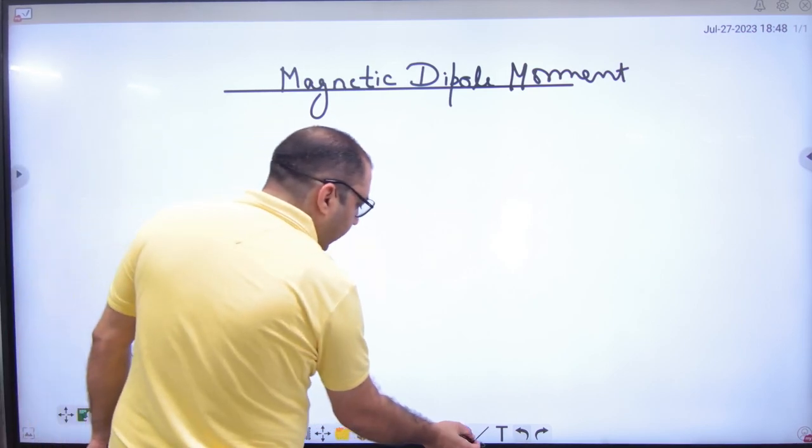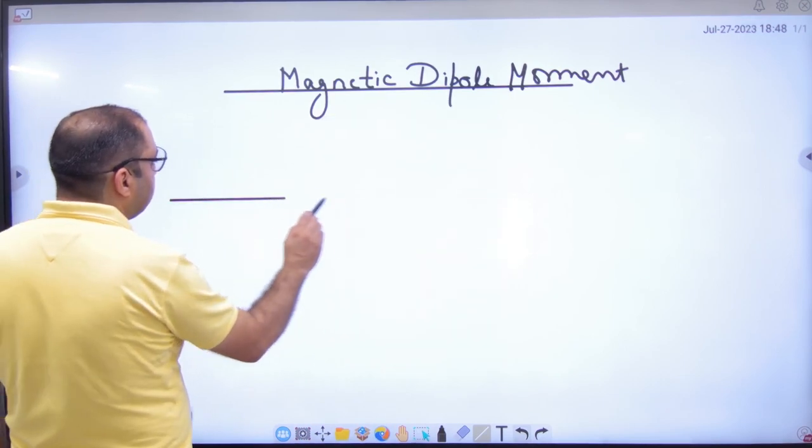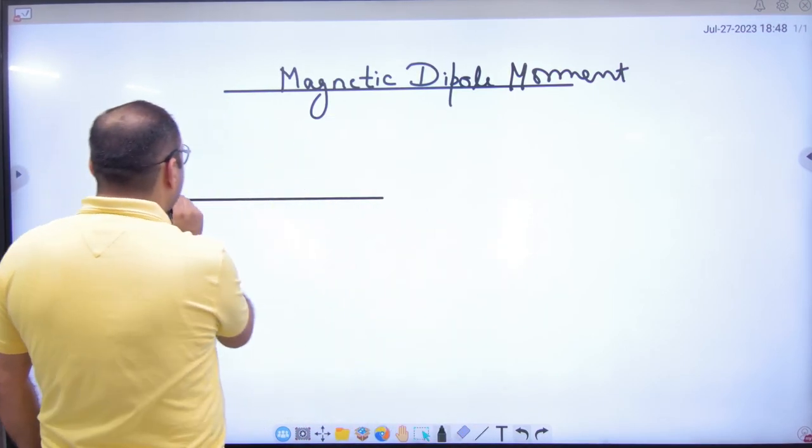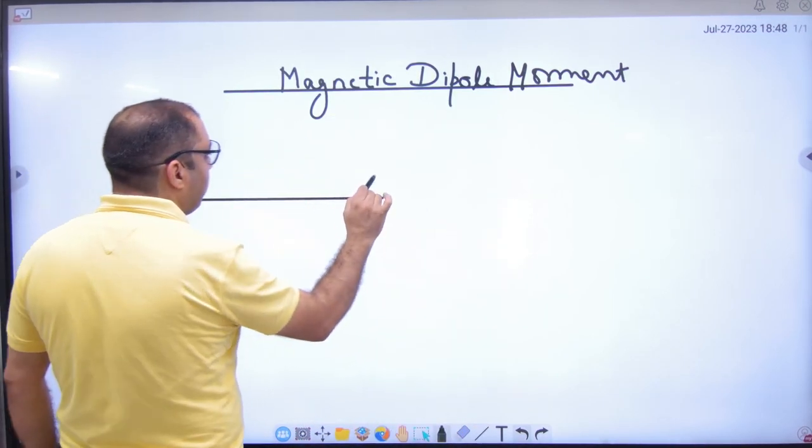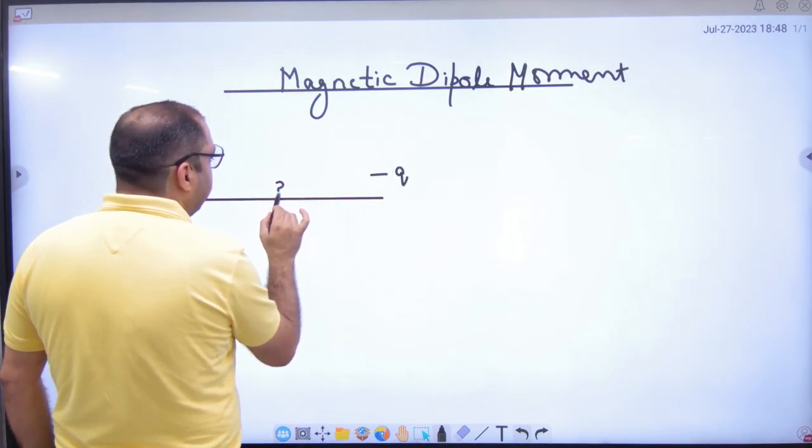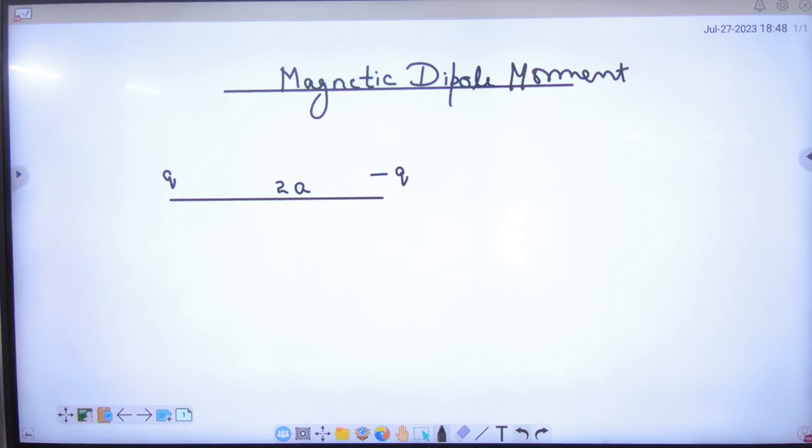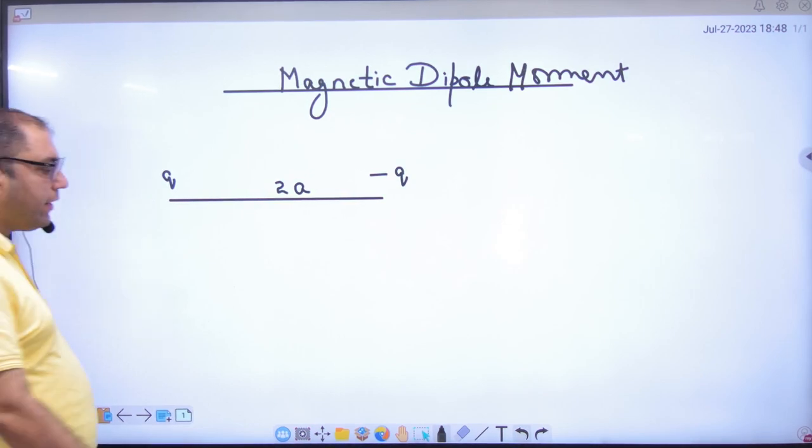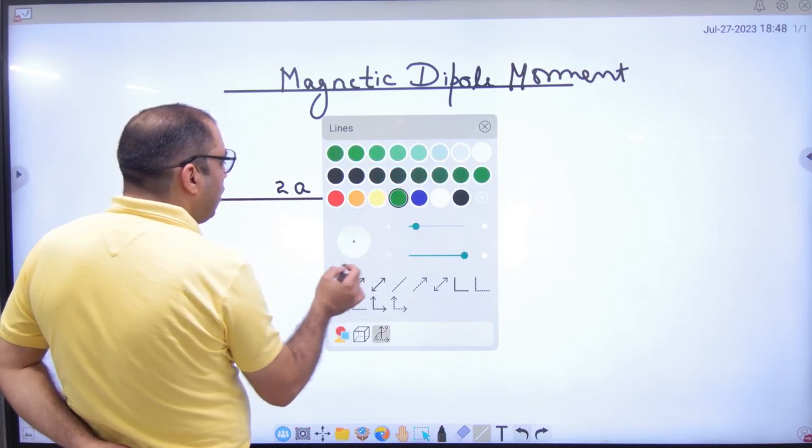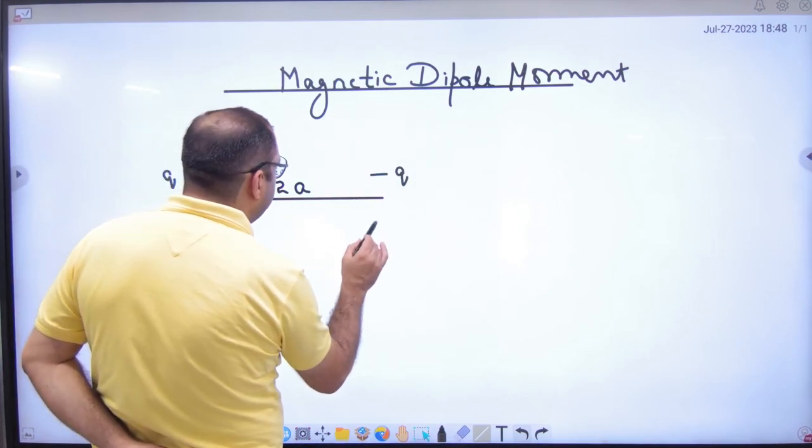How did it do? Suppose you have two charges. One is Q and one is minus Q, separated by a small distance. What is this? Electric Dipole. Electric Dipole is a combination of two equal and opposite charges separated by a small distance.